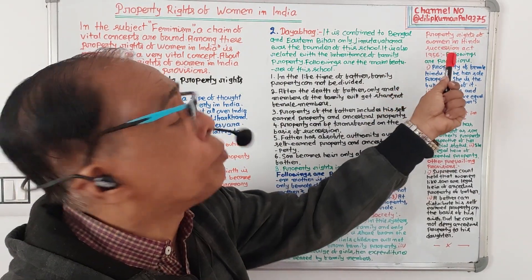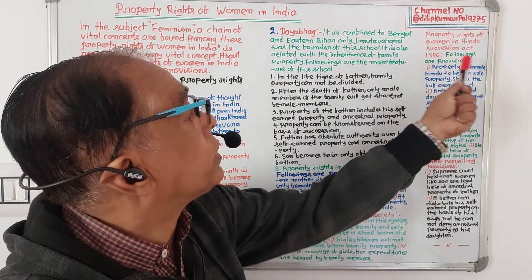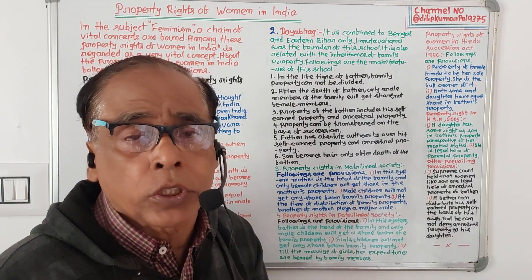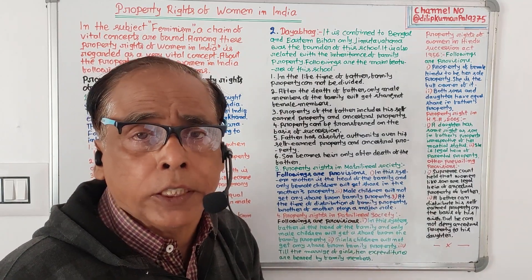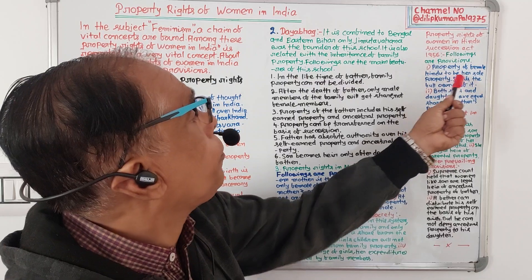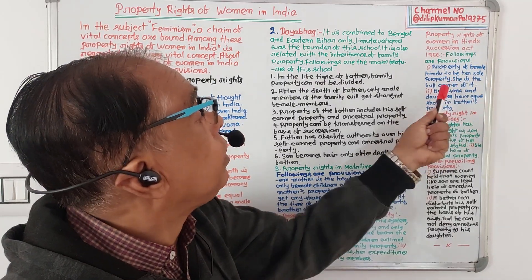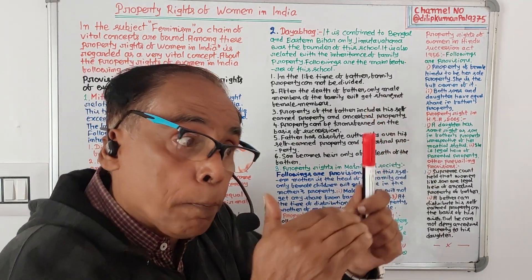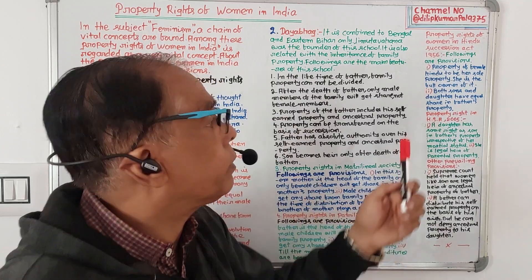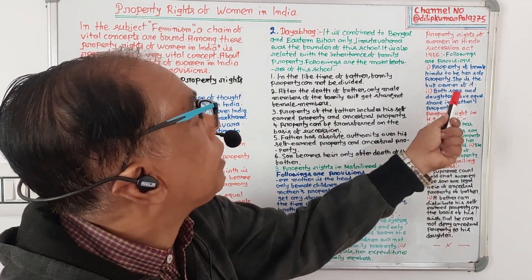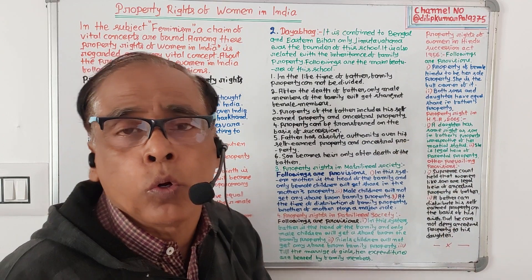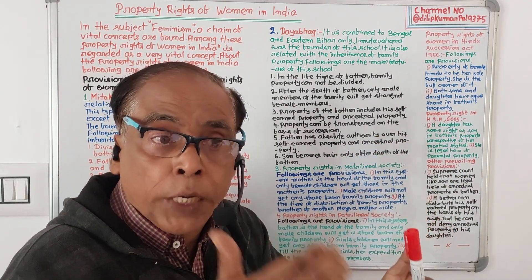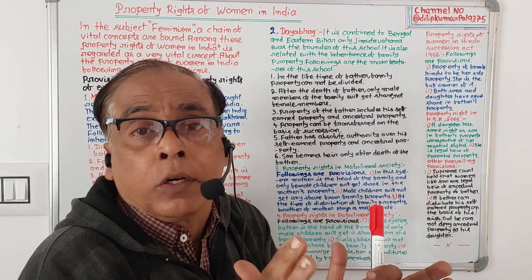Now, property rights of women in the Hindu Succession Act 1956. What does the Hindu Succession Act 1956 speak about inheritance of property? Number one: property of a female Hindu is to be her sole property — she is the full owner of it, not partial owner. Number two: both sons and daughters have equal share in the father's property.